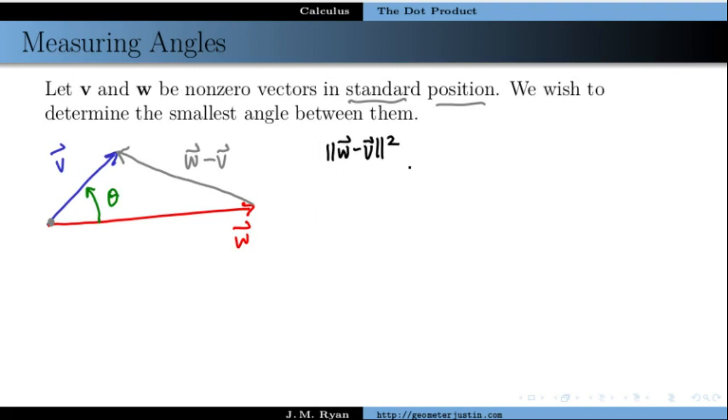So the length of w minus v squared is equal to the sum of the squares of these sides. So the length of v squared plus the length of w squared, and then minus twice the product of these two, v times the length of w, and then times the cosine of the angle that we care about. So the cosine of the angle theta.